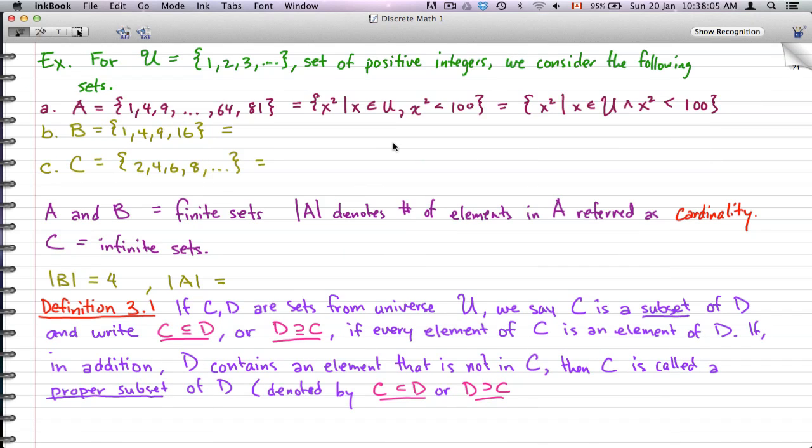Now, what we have here is several examples. So, let's just go through the first example. For U = {1, 2, 3, ...}, a set of positive integers, we are considering the following sets. So the universe is a set of positive integers.